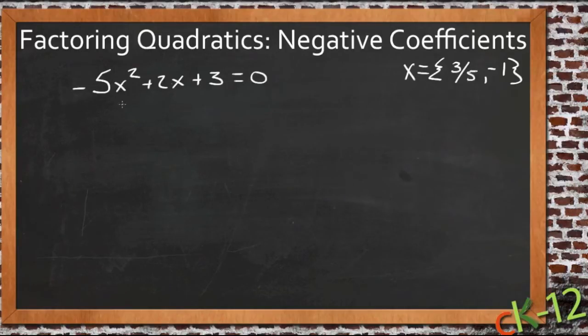And I want to use an example or a problem that was actually sent in by a young lady named Clara who said that she had solved the problem that's given here on the screen, negative 5x squared plus 2x plus 3 equals 0 for x. And she came up with x equals 3 fifths and negative 1.